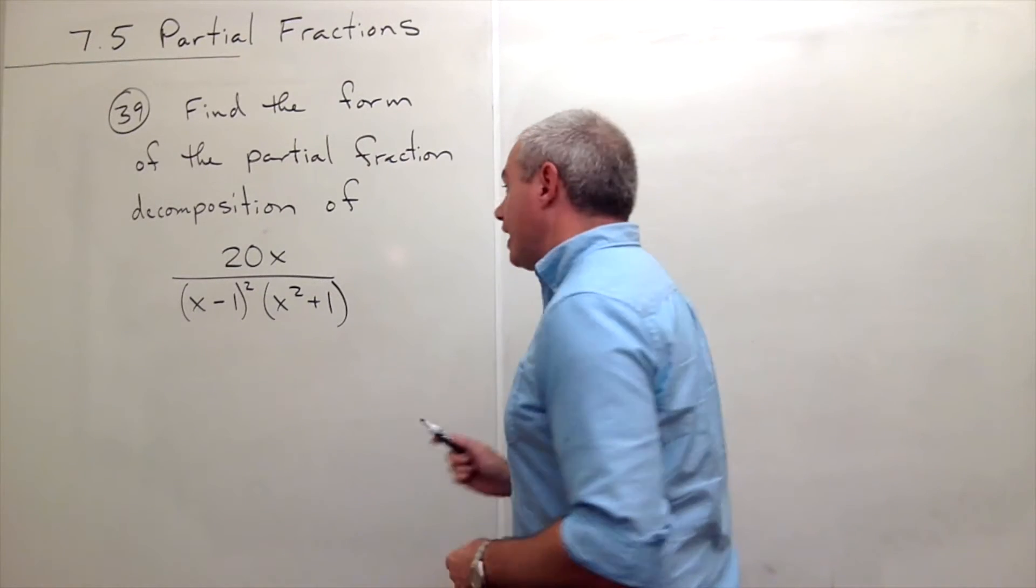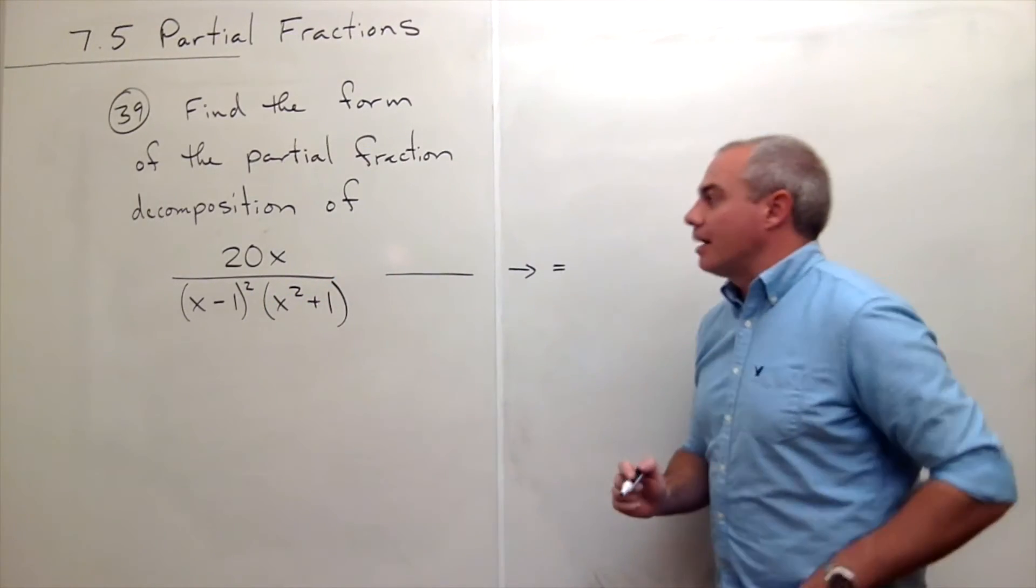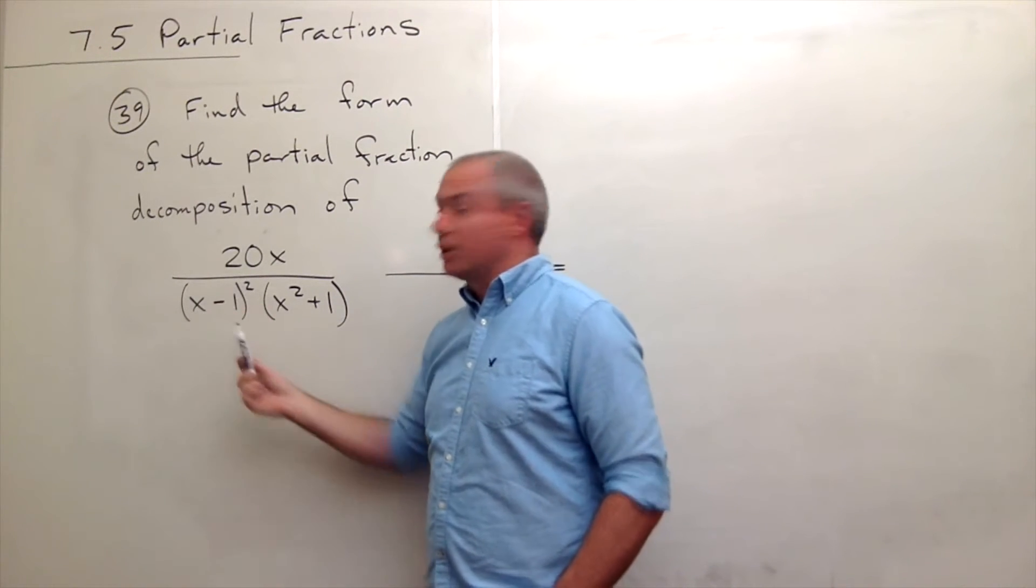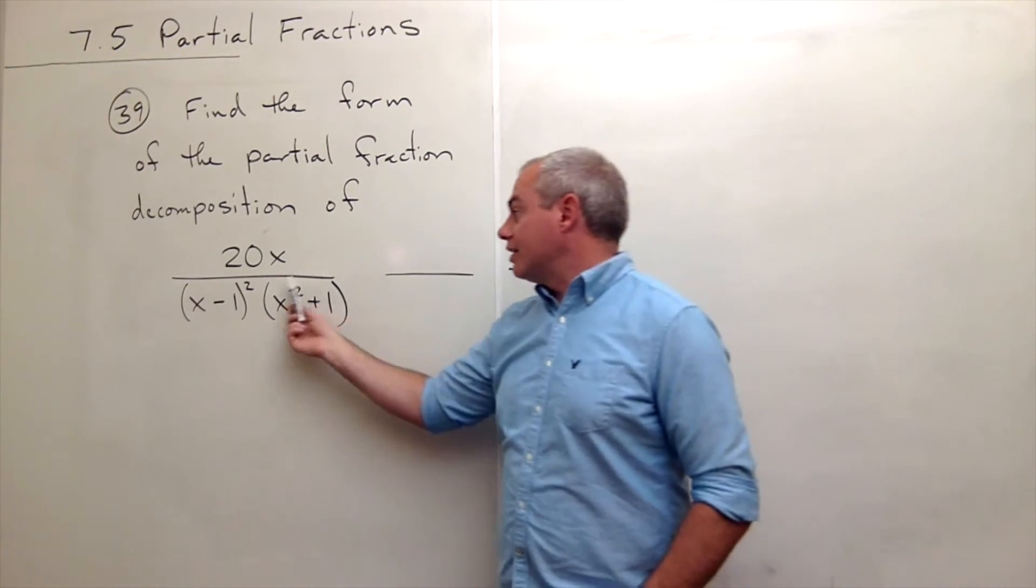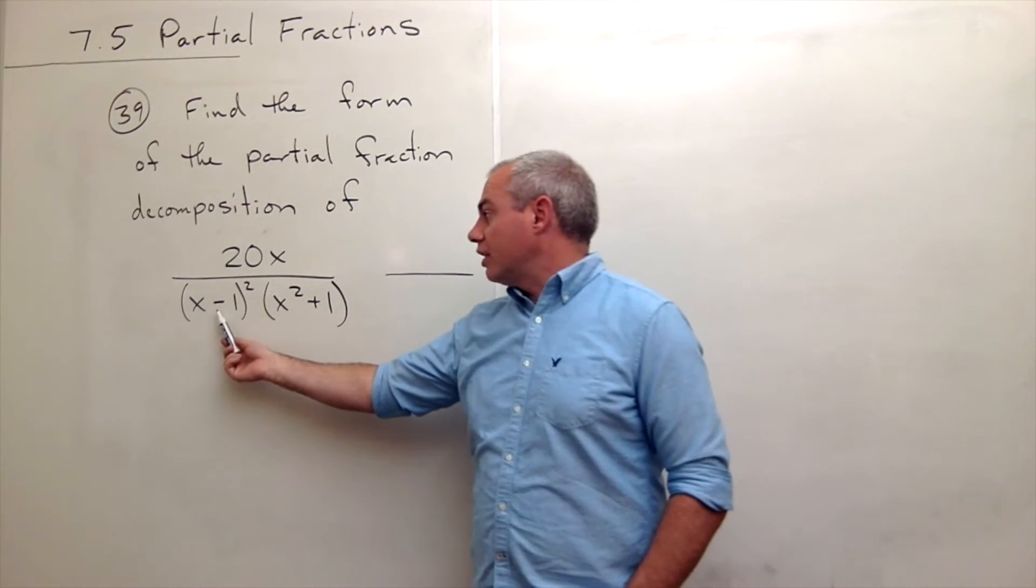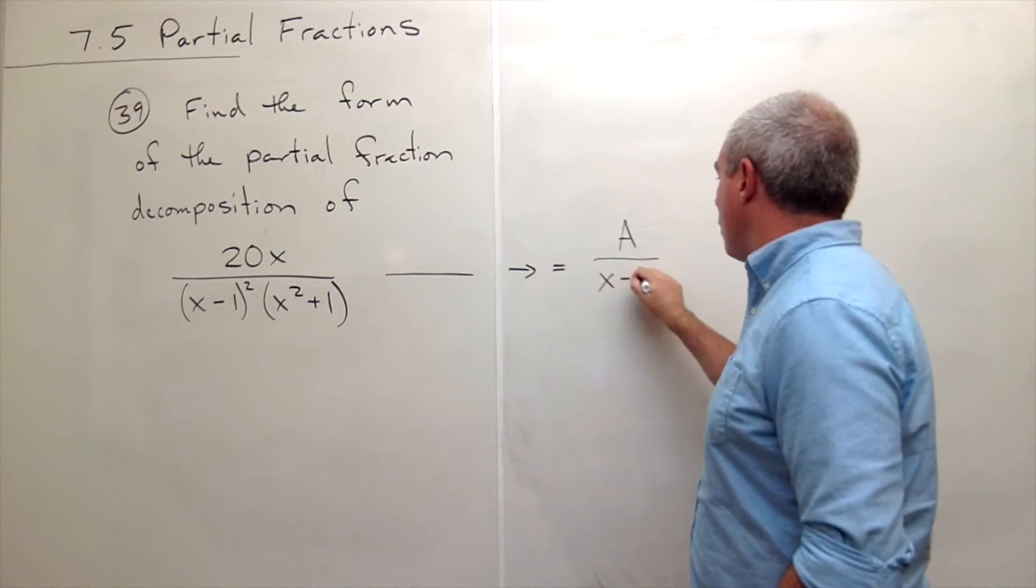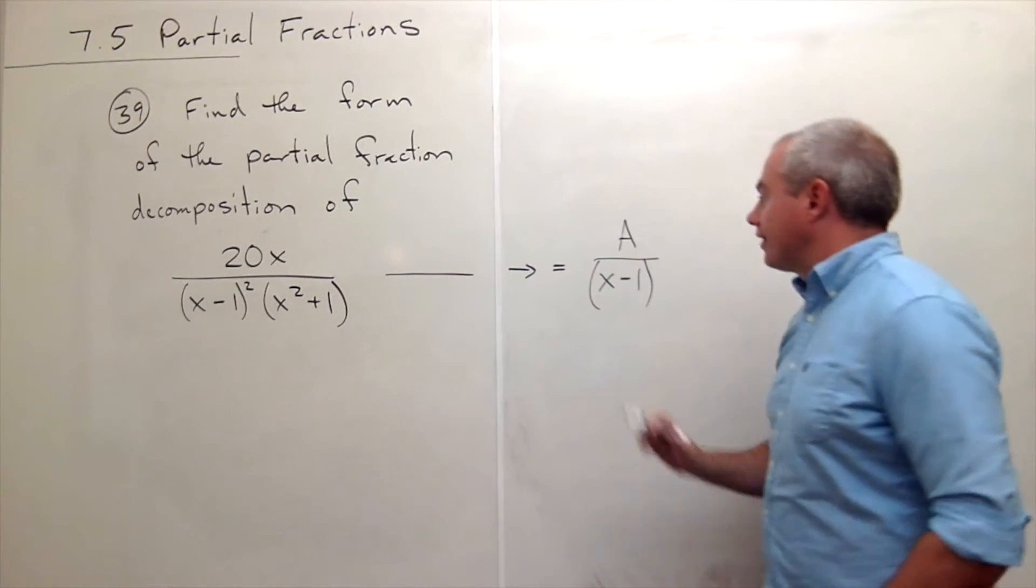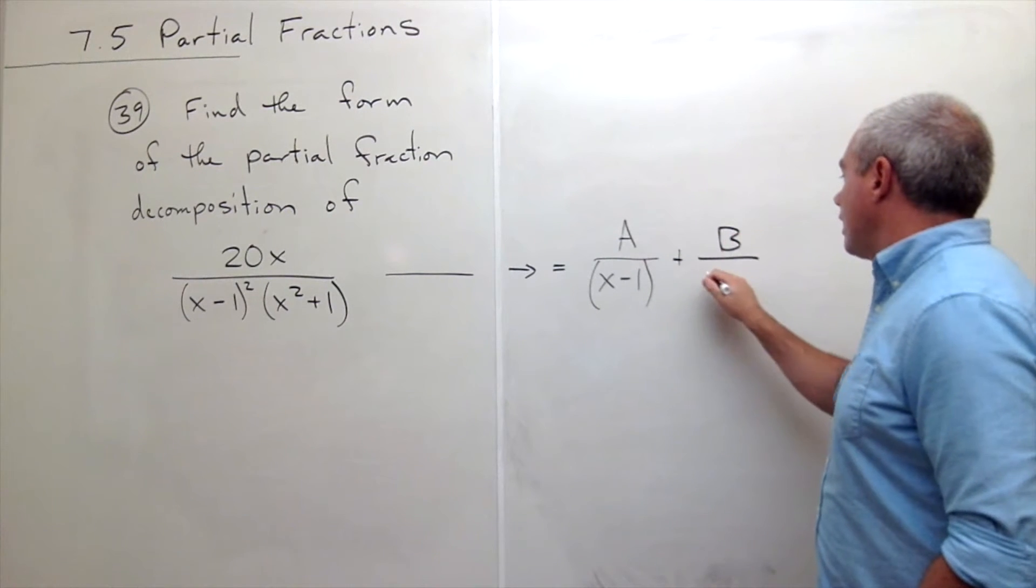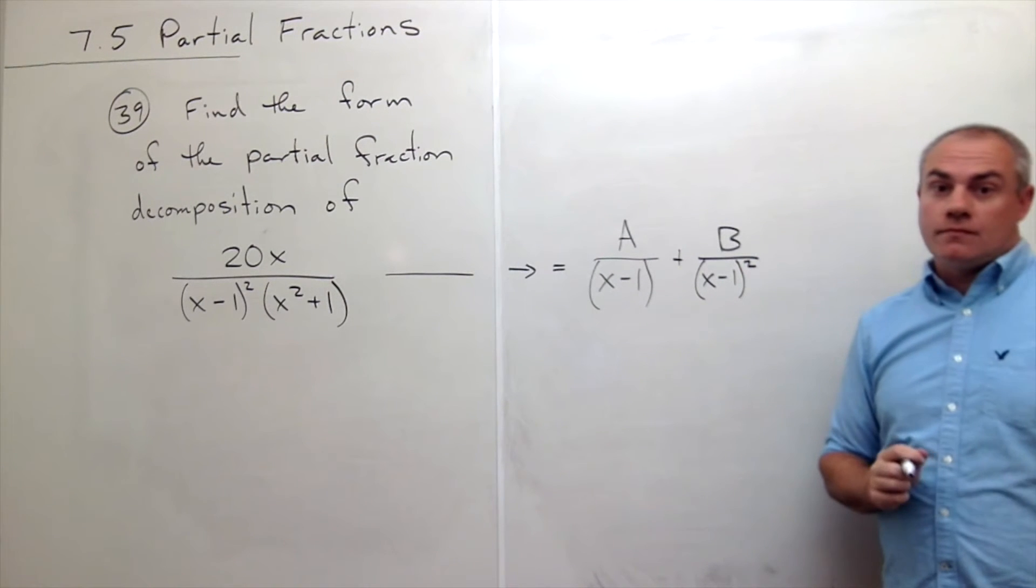So what I do if I have something of this form is I need to break this up into three fractions. I'm going to get two fractions because of the linear being squared, and I'm going to get an additional fraction for this irreducible quadratic. So the linear squared is going to give me a fraction A over (x-1), where the x-1 is not squared, plus B over (x-1)².